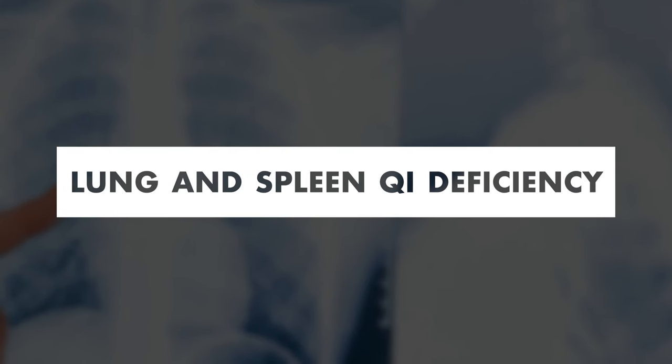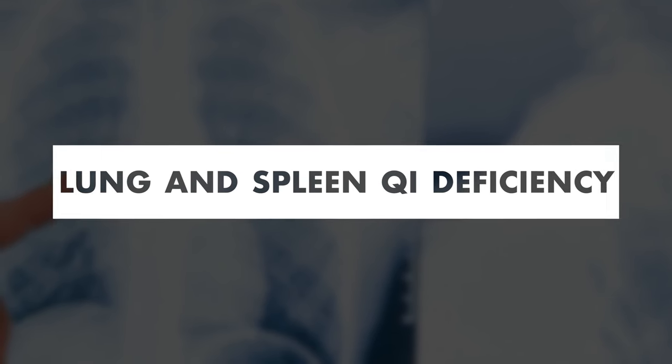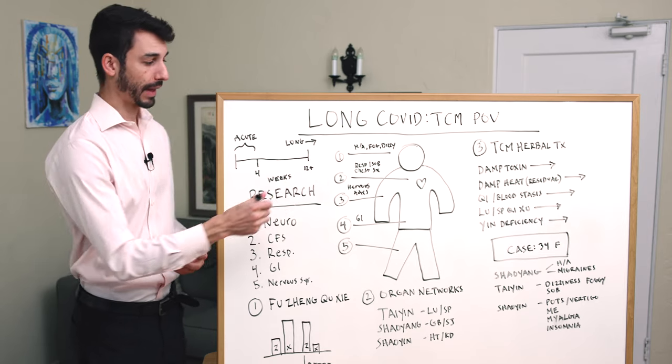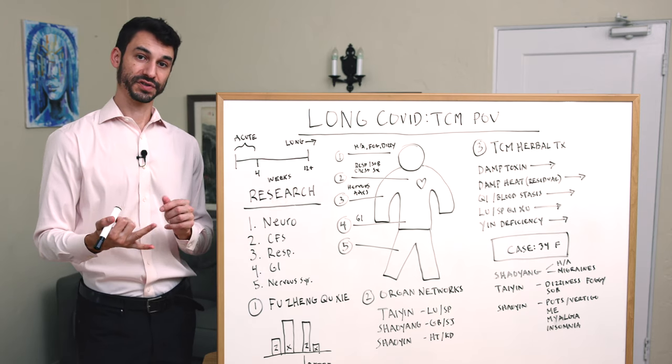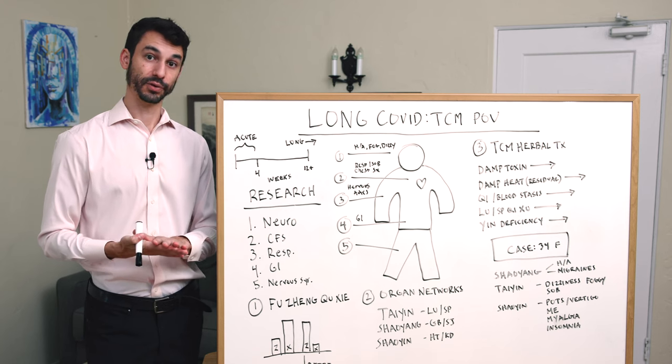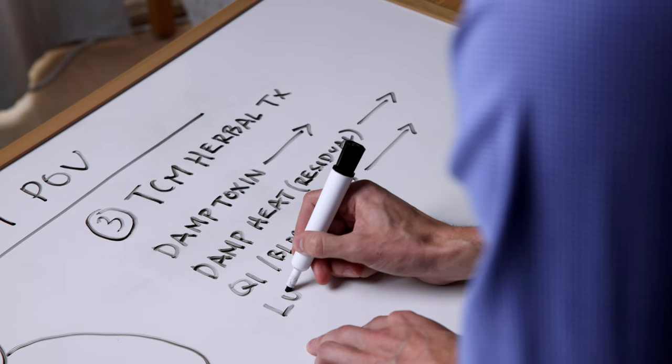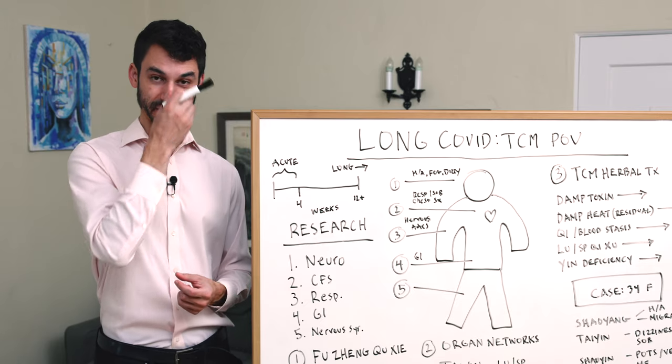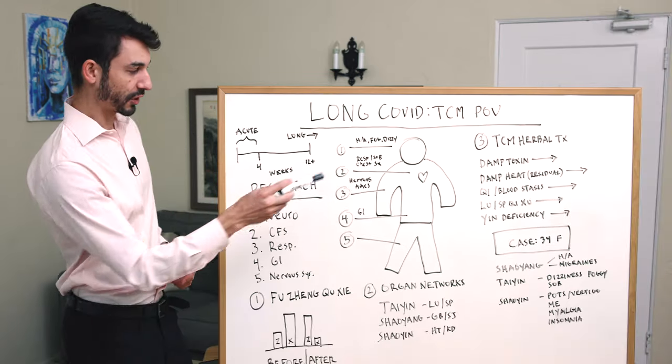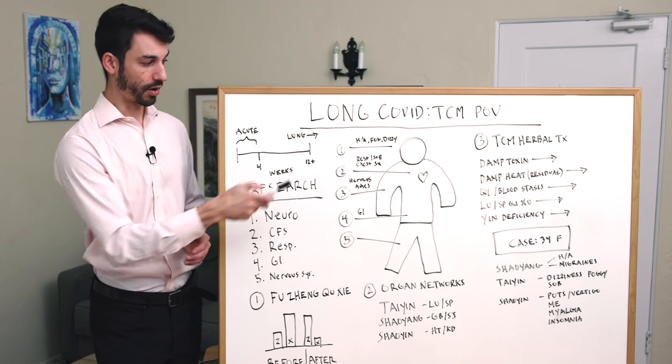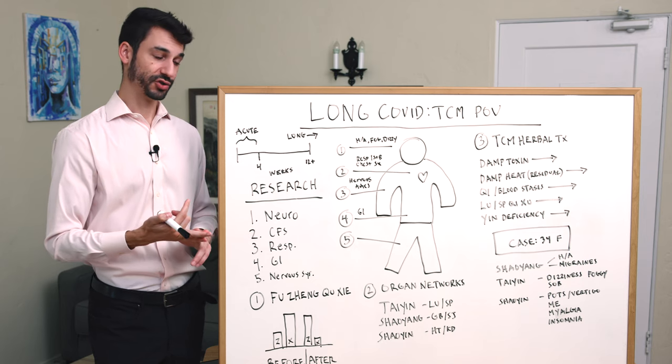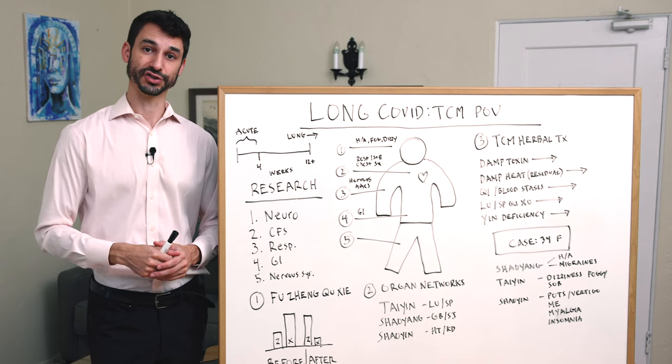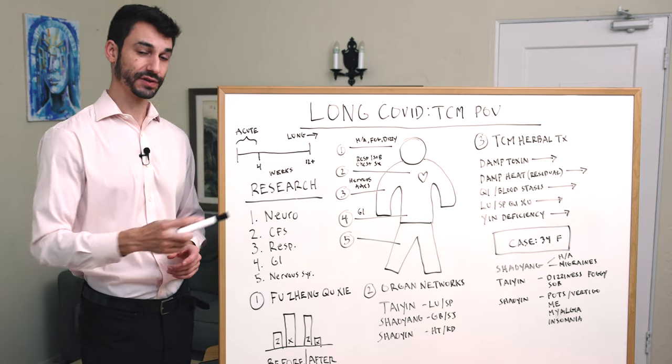Lung and spleen qi deficiency—what we're seeing here is most often respiratory and digestive symptoms that linger. Respiratory being chronic shortness of breath, chronic wheezing, chronic sputum production. On the GI side, we're typically seeing very low appetite, bloating, loose stools, food allergies, and sometimes for women discharge. Lung and spleen often govern issues with the mucous membranes and with dampness. For this we often use a combination of herbs: rou gui (cinnamon bark), ren shen (ginseng), bai zhu (atractylodes), and fuling (poria).